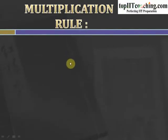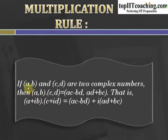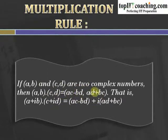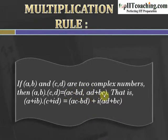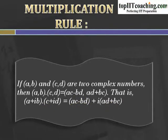The second is the multiplication rule. If (A, B) and (C, D) are two complex numbers, then (A, B) times (C, D) equals (AC minus BD, AD plus BC). So the real part of the product is AC minus BD and the imaginary part is AD plus BC. That is, multiplying (A + iota B) into (C + iota D) gives AC minus BD as the real part and AD plus BC as the imaginary part.